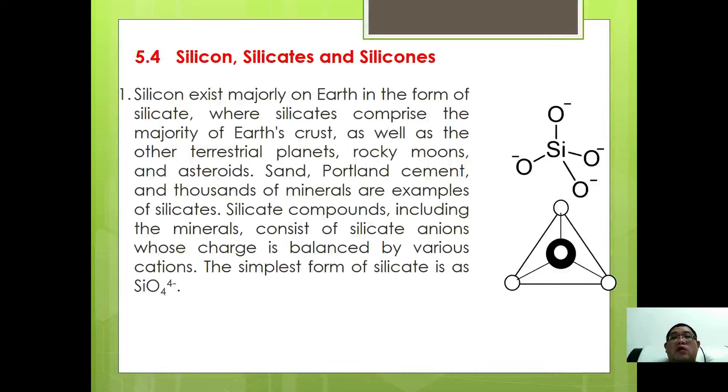Silicon exists majorly on Earth in the form of silicate. Silicates comprise the majority of Earth's crust as well as terrestrial planets, rocky moons, and asteroids. Sand, Portland cement, and thousands of minerals are examples of silicates. Silicate compounds include minerals consisting of silicate anions. The basic unit of silicate anion has the formula SiO4^4-. If oxygen is not shared between two silicon atoms, each oxygen holds a negative charge. This is a tetrahedral pyramid structure with silicon at the center and oxygen on top.